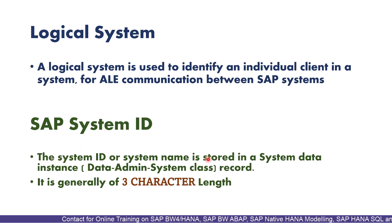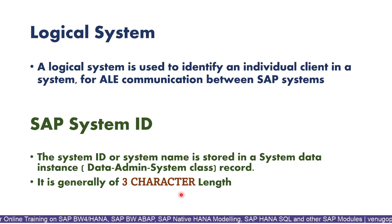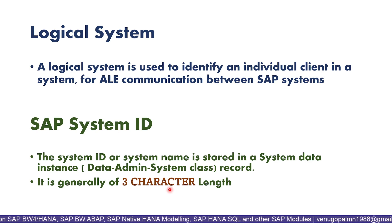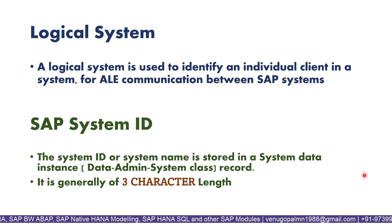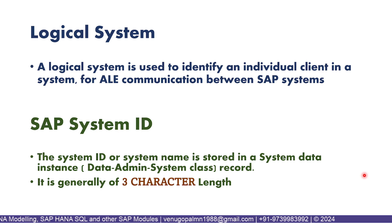Coming to SAP system ID — the SAP system ID or system name is stored in a system data instance. It is generally of three-character length. This value will be given by the SAP Basis team or admin people during the installation of SAP. Each system in your landscape will have a unique system ID — for example, development may have DH1, quality MH1, production PH1, or DW1, MW1, PW1, or DC1, MC1, PC1 — it depends on the client.